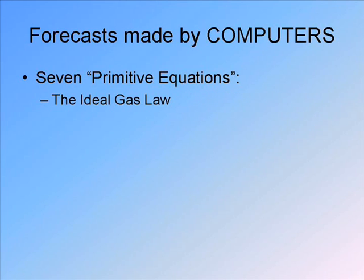Another primitive equation is the ideal gas law — the only one of the seven I believe we actually learned in equation form: P equals rho RT. It's a very basic equation that relates how temperature, pressure, and density are related in the atmosphere.